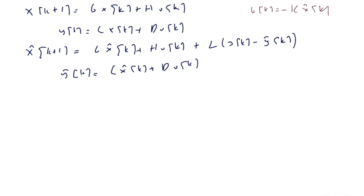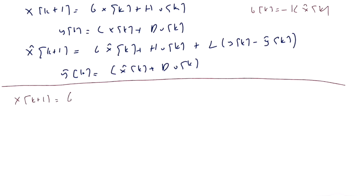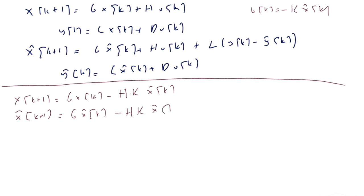Let's simplify these equations. X(K+1) = G·X(K) - H·K·X-hat(K). And X-hat(K+1) = G·X-hat(K) - H·K·X-hat(K) plus L·C·(X(K) - X-hat(K)), because Y = C·X and Y-hat = C·X-hat, so Y - Y-hat = C·(X - X-hat).